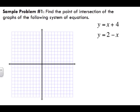Here is our problem: find the point of intersection of the graphs of the following system of equations. The point of intersection is where the two lines cross each other. Note that when a question says 'solve' and you have two lines, you're being asked to find the point of intersection. The first equation is y = x + 4.